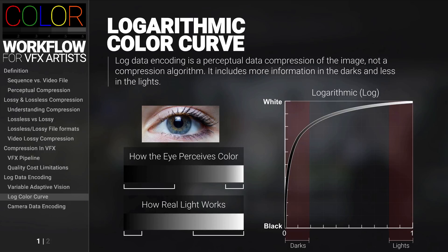Logarithmic data encoding does not use a compression algorithm. In other words, it does not compress the image after it's been created or decompress the image upon opening of the file. Rather, the data encoding is how the actual image data is written to the file, which means this logarithmic color curve is baked into the file as it's being captured from the camera.